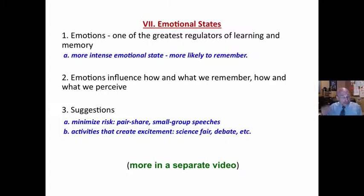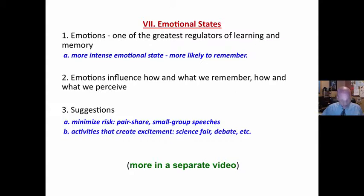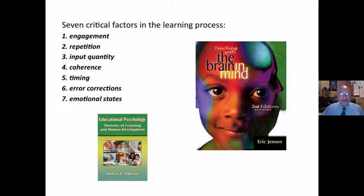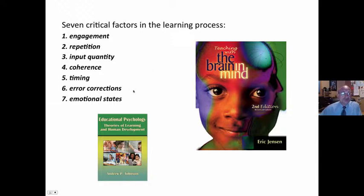Include activities that create excitement such as science fairs, debates, TED talks, etc. Create a positive emotional state to enhance learning. In summary, the seven critical factors in the learning process for brain-based learning are: engagement, repetition, input quality, coherence, timing, error correction, and emotional states.